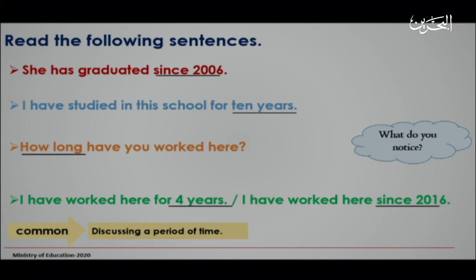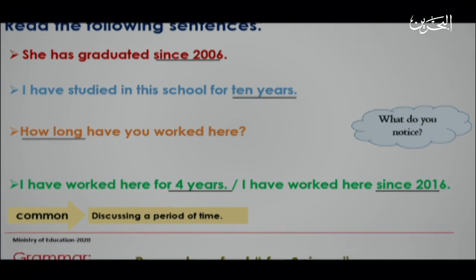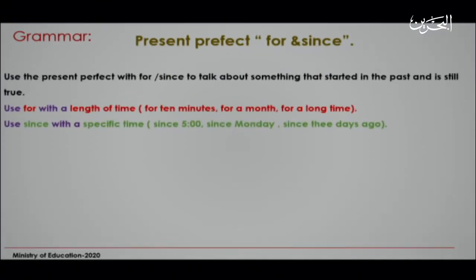You see? They are all discussing a period of time. Grammar: Present Perfect with 'for' and 'since.' Use the present perfect with 'for' or 'since' to talk about something that started in the past and is still true.